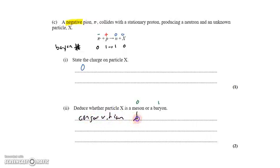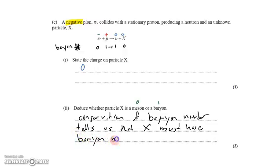So conservation of baryon number tells us that X must have baryon number zero. And if it has baryon number zero, it is a meson.